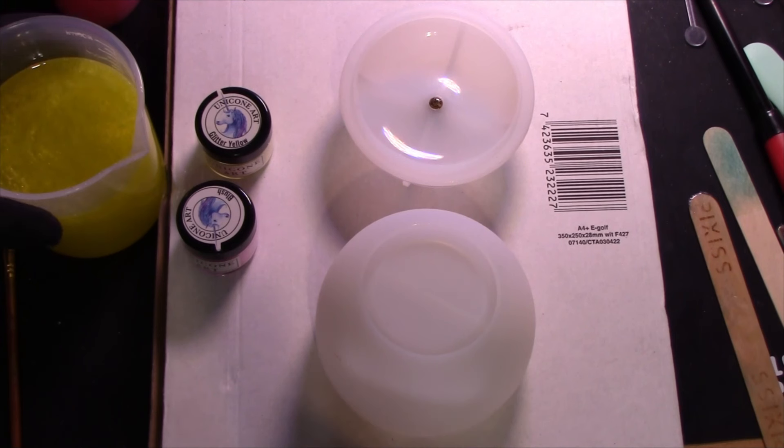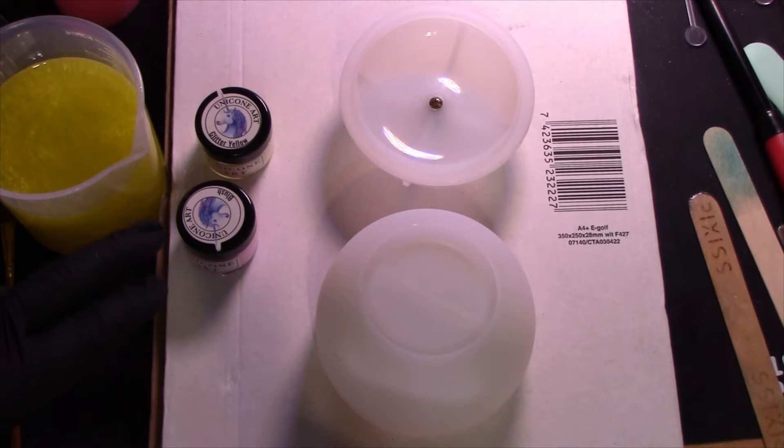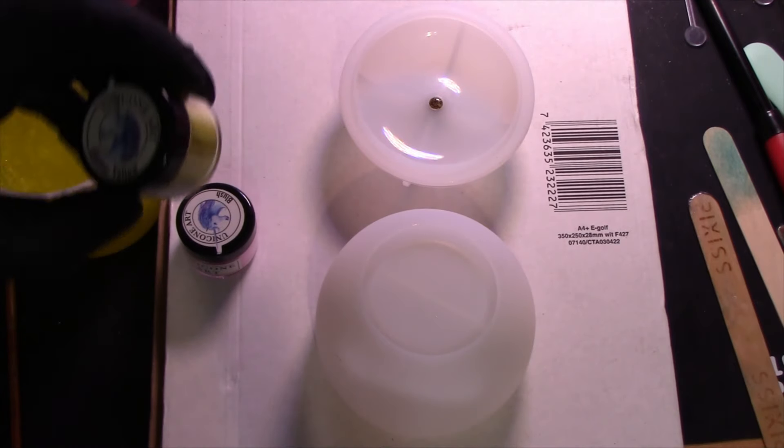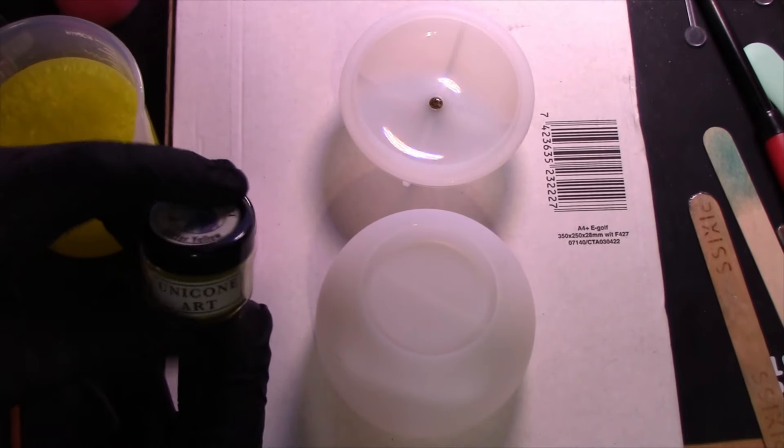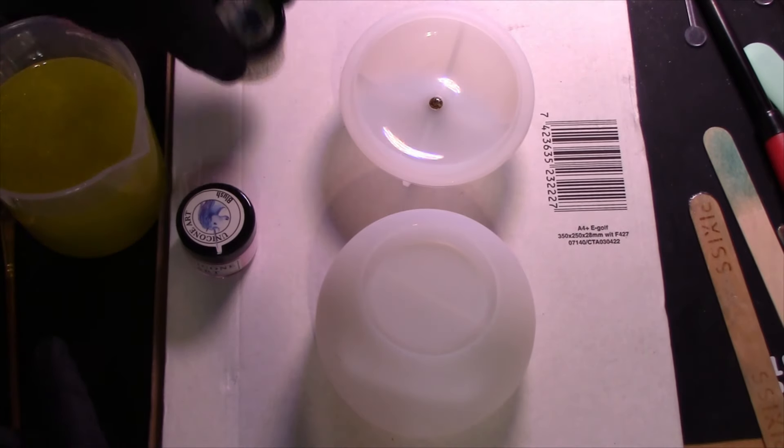I've already pre-mixed my resin which is Resin Pro iCrystal 5 so it's a deep pour. I'm using and I colored Glitter Yellow from Unicone Arts. It's really well you see the color.